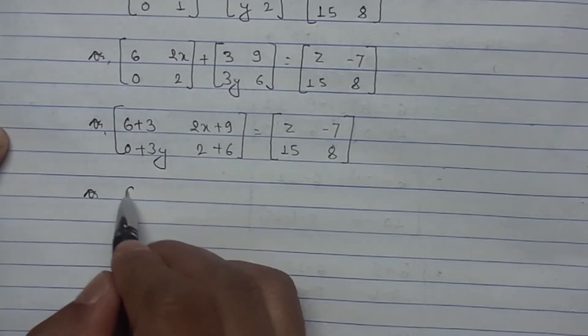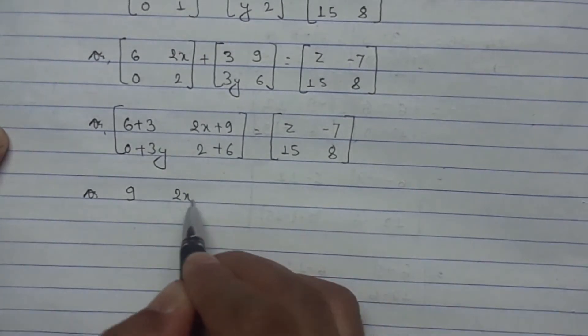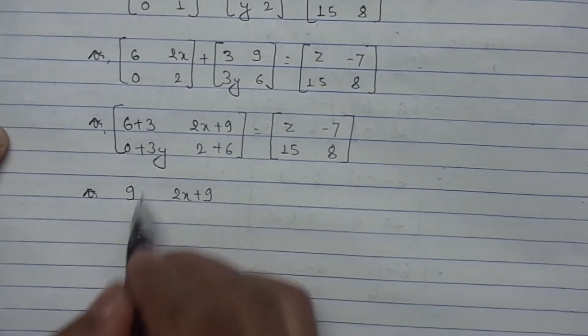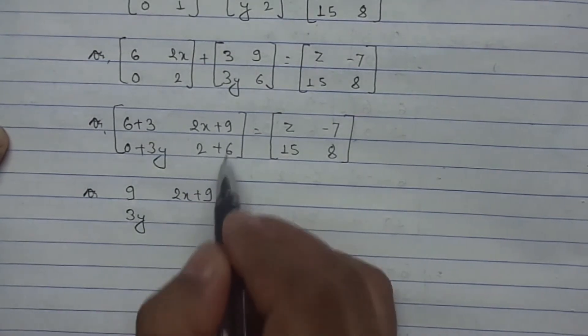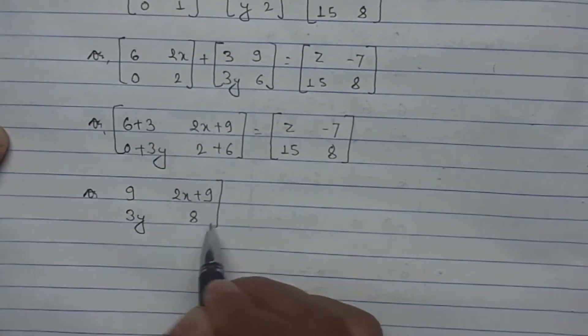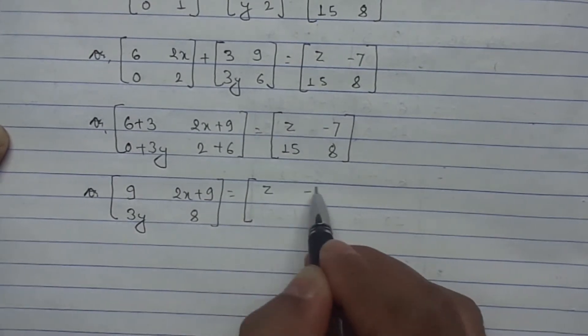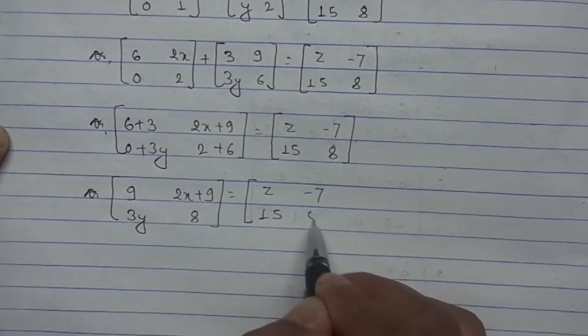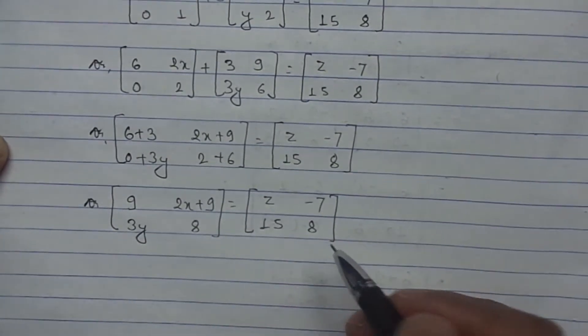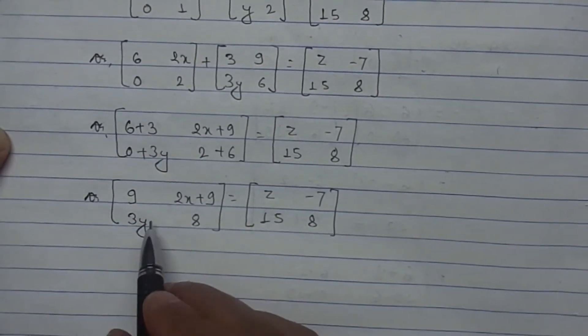So 6 plus 3 is 9, 2x plus 9 as it is, 0 plus 3y is 3y, 2 plus 6 is 8. So the matrix [9, 2x+9; 3y, 8] equals [z, -7; 15, 8]. Now see, these two matrices are equal matrices.